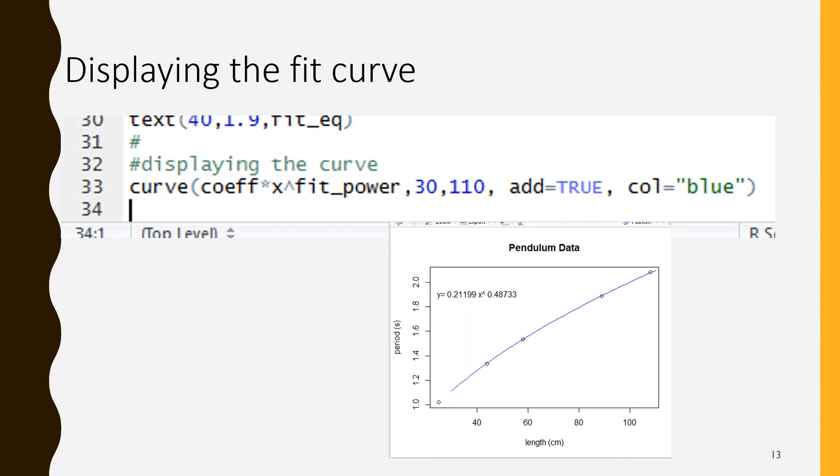Our final step will be to draw our fit function, our power law that we derived, onto the plot. We're going to use the curve method to do that. The first argument is the function we want to plot. We want to plot our coefficient times x raised to the fit power. Remember that all multiplications must be made explicit. So coefficient asterisk x caret to use raised to fit_power. That is the function. Remember also in curve that the variable must be called x.